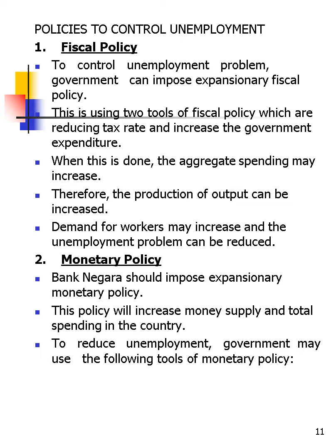To overcome unemployment, we use the same fiscal and monetary policy tools as for inflation but in the opposite direction. Unemployment means the economy is in recession — not enough money — so we add money. Government expenditure will increase and taxes will be reduced: expansionary fiscal policy. For monetary policy, we increase the money supply by reducing the discount rate and interest rate so that everybody has money to spend and invest.